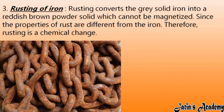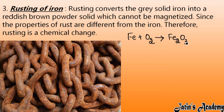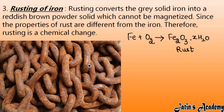Next we are having rusting of iron. Rusting of iron means when iron comes in contact with moisture and oxygen present in the atmosphere, it forms Fe₂O₃ — iron oxide — with water molecules, which is nothing but rust. Iron is actually a gray solid, but when it comes in contact with moisture or oxygen, it forms a reddish-brown powder as an outer layer on the iron.